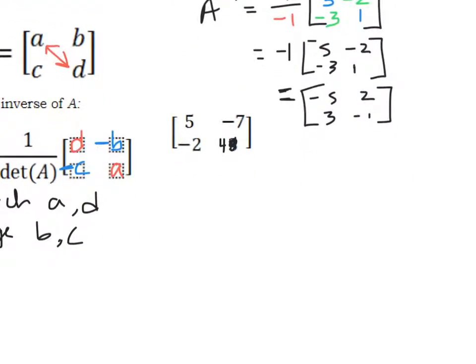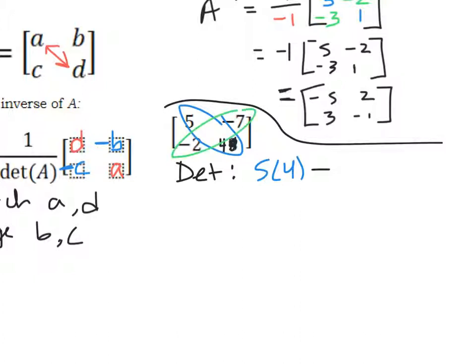All right. So once again, if I want to find my inverse matrix, I need to find my determinant first. So my determinant would be first diagonal 5 times 4 minus my second diagonal, which is negative 2 times negative 7. Make sure you're careful on signs right here. So I have 20, then minus. That changes to a positive 14. So my determinant is 6. So for my inverse, I need to do 1 over my determinant, which is 6.